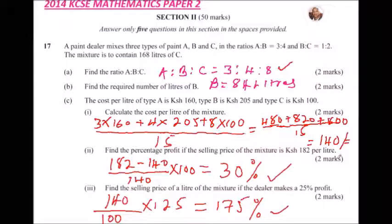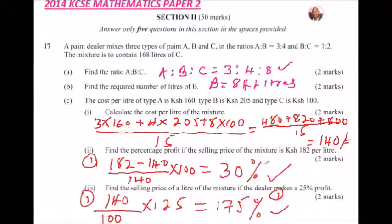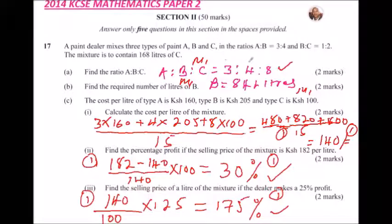That is how you work out that question. In terms of marks distribution: 1 mark for the ratio, 1 mark for the answer in part B, 1 mark for the cost per liter method, 1 mark for the answer, 1 mark for the percentage profit method, and 1 mark for the answer — totalling 10 marks. Try and work out other questions from this area and you will be able to understand.